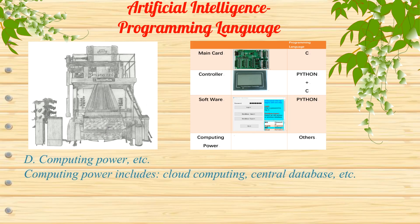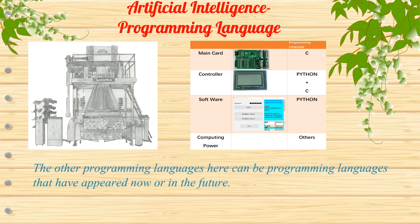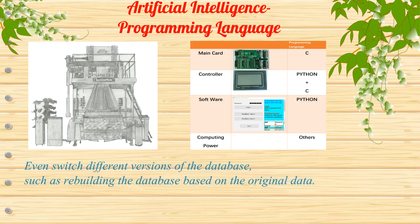D. Computing power includes cloud computing, central database, etc. The programming language can be Python or other languages — including programming languages that have appeared now or in the future. They all exchange data with the central database, and you can even switch different versions of the database, such as rebuilding the database based on the original data.